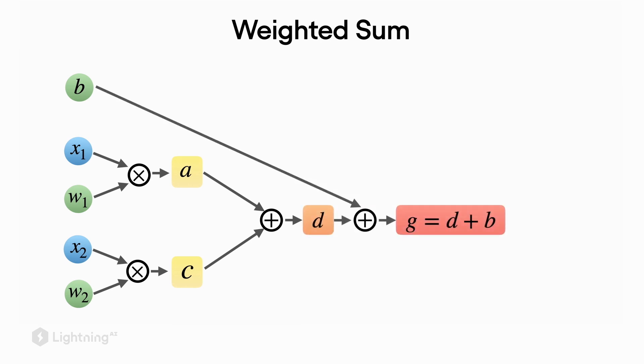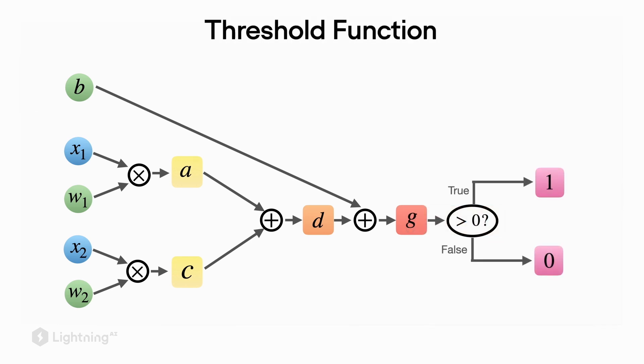After computing the weighted sum including the bias unit, we apply the threshold. If the weighted sum is greater than zero, we output class label 1, otherwise we output class label 0.